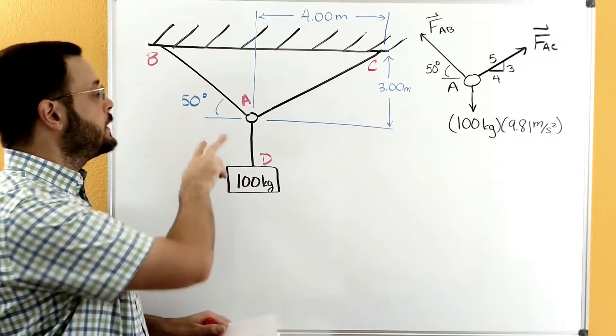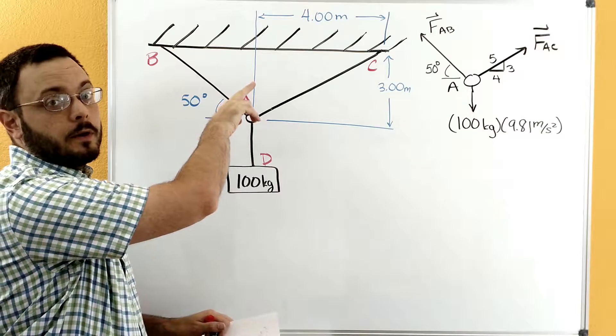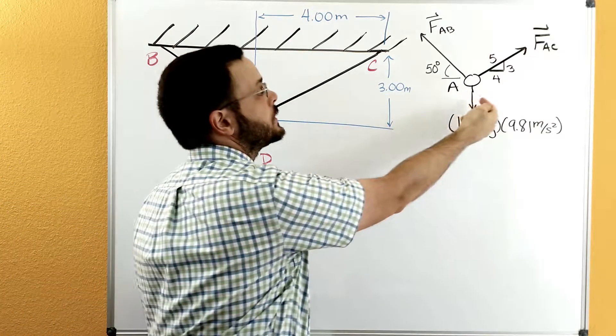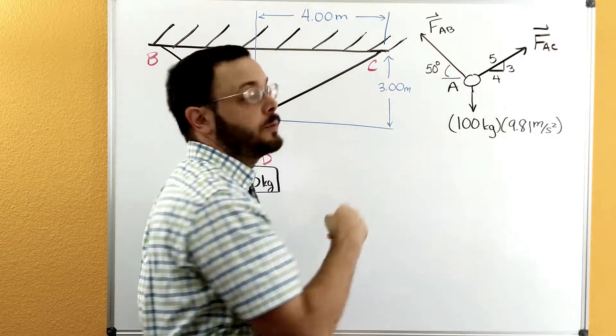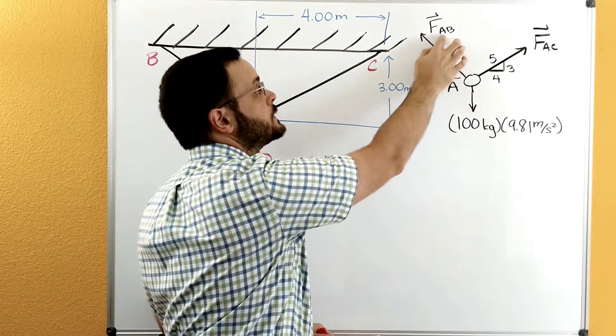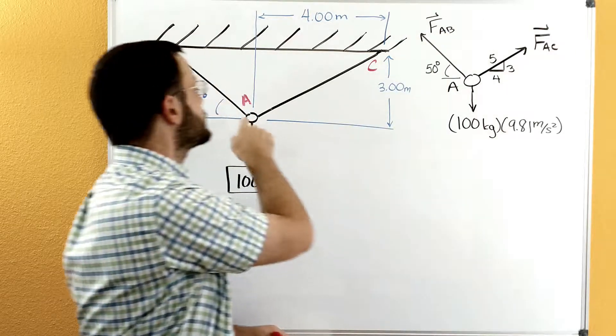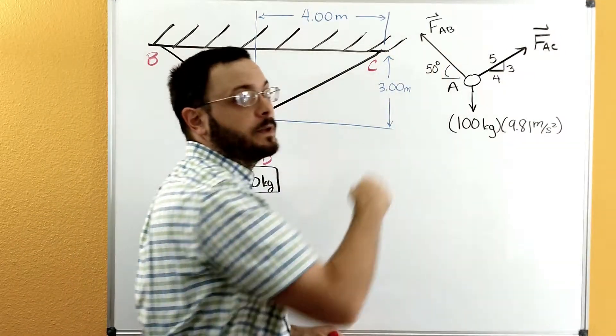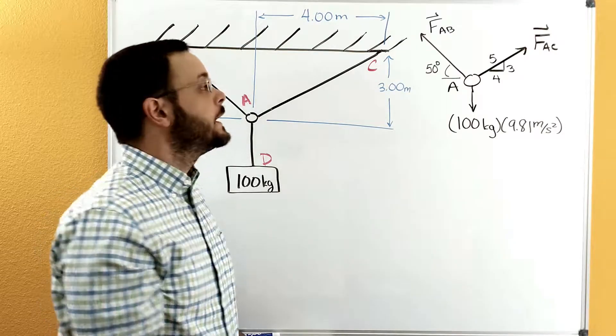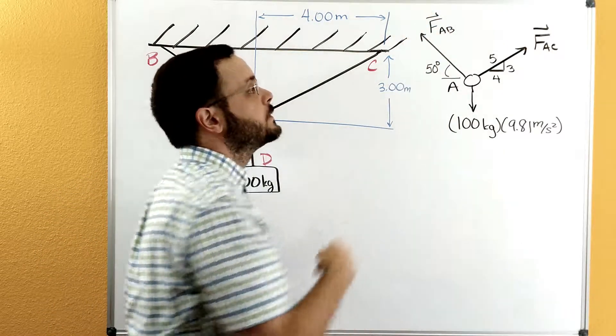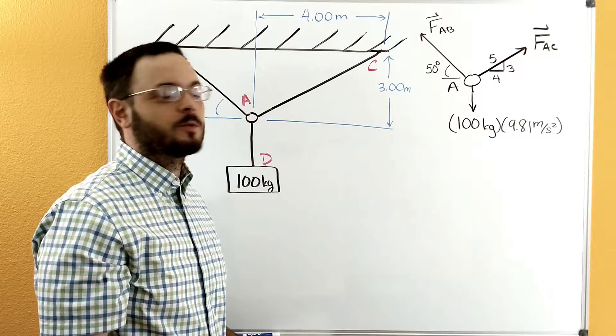For FAB, we cut through cable AB over here, and so we show the force that was in that cable. We want to label it something like F or T, and then use the two points, so AB, so FAB or TAB. We also want to show that it's a vector, and so we'll go ahead and put the vector symbol on top to show that that's a vector quantity.